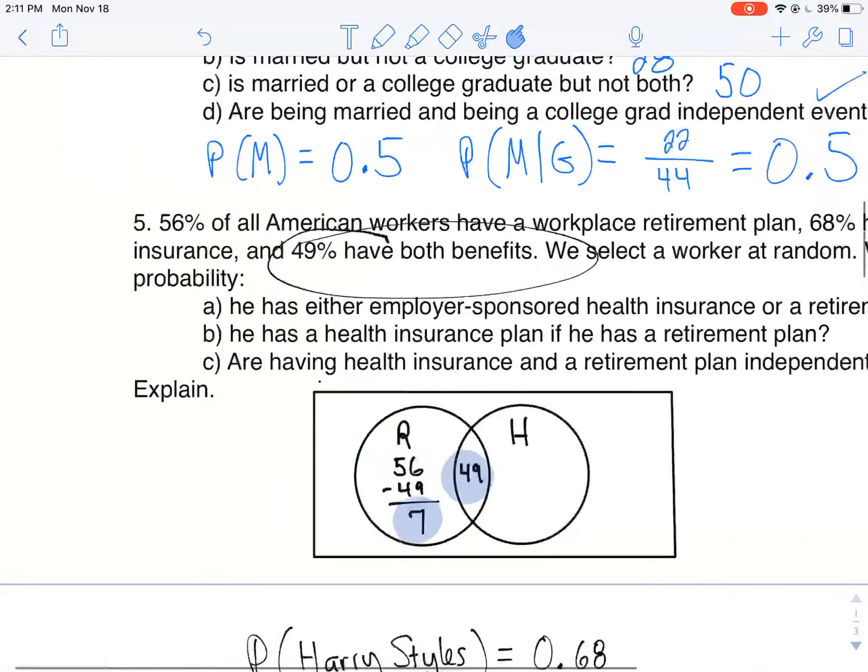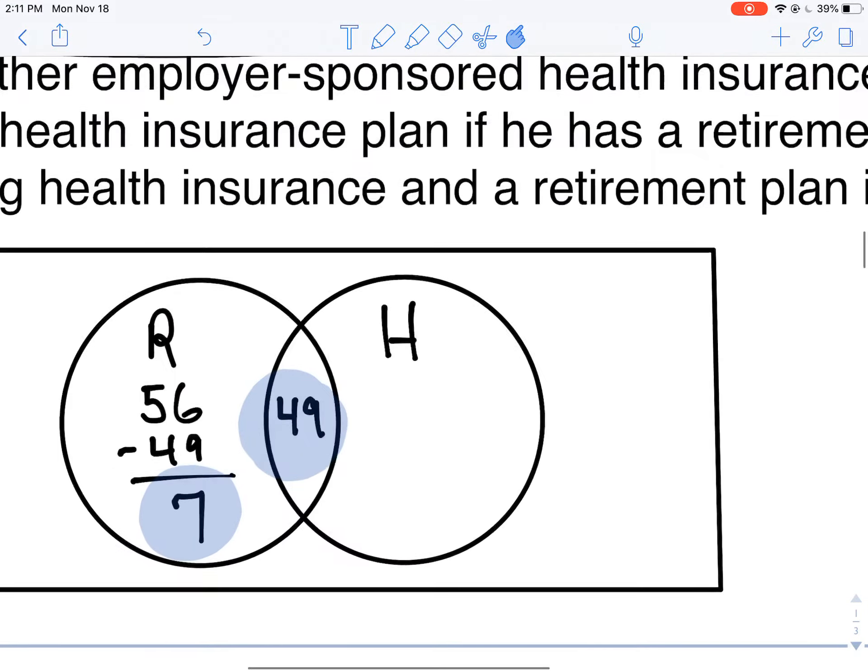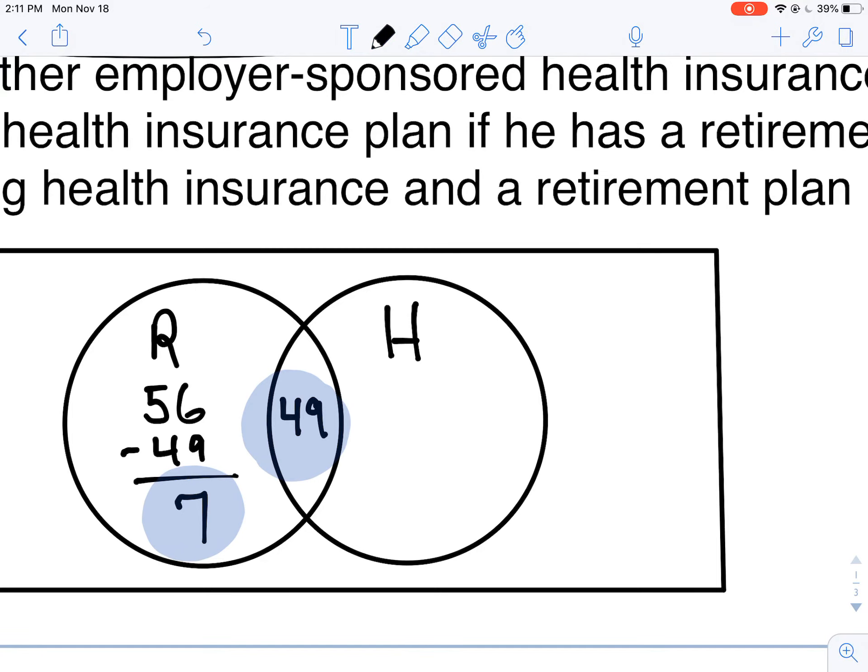Likewise, they tell me that 68% have health insurance. That includes both because it doesn't say anything about them only having health insurance. So I'm gonna take away the 49, and that leaves me with 19.